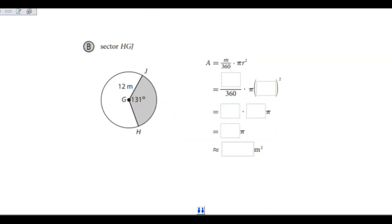In example B, we're looking for sector HGJ. We're looking for this grayed out section here. I see that I have a radius of 12 meters.